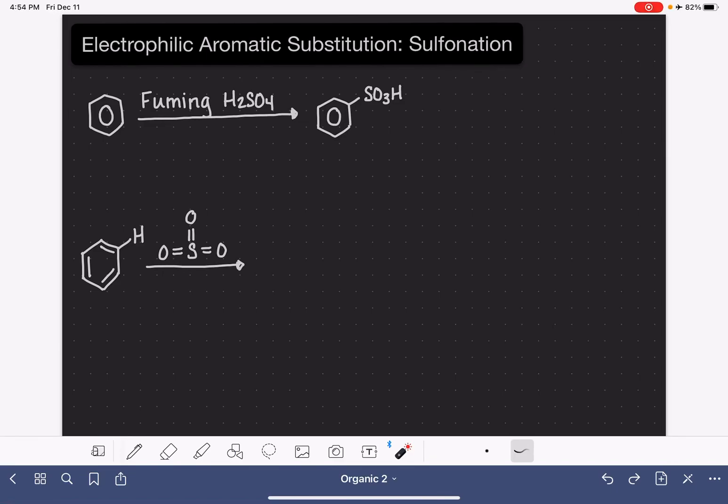In the sulfonation of benzene, we use something called fuming sulfuric acid to add an SO3H group to the benzene ring. One of the interesting things about this reaction is that we can remove the SO3H group with dilute sulfuric acid.